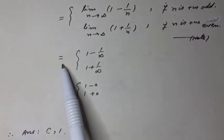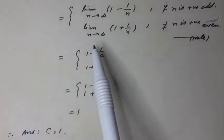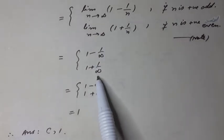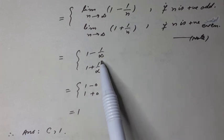And it can be written as equal to 1 minus 1 over infinity if n is odd, and 1 plus 1 over infinity if n is even. 1 over infinity is equal to 0.